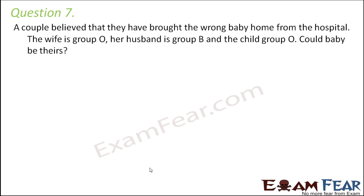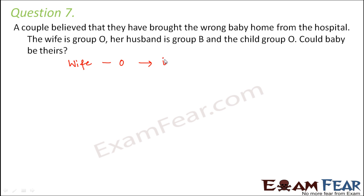A couple believes that they have brought the wrong baby home from the hospital. The wife is blood group O, her husband is blood group B, and the child's blood group is O. Could the baby be theirs? So here, the blood group of the wife is O, which means her genotype would be I^i I^i.